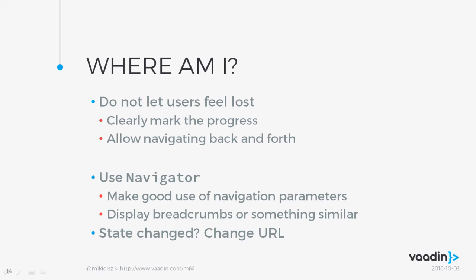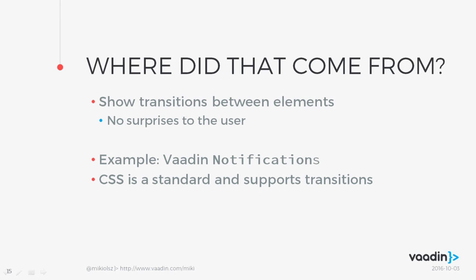Helping users realize where they are — what part of the system they're in and how they got there — has two bullet points: clearly marking the progress, and allowing navigation back and forth. Navigation back and forth is something often forgotten in web applications written with Vaadin, because everything runs on one page without any state to preserve from different steps. This is where we can use Navigator. A rule of thumb is that when you change the state of your application, you should change the URL. Then by just entering the URL, you can come back to where you were previously and bookmark that place.